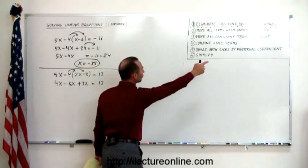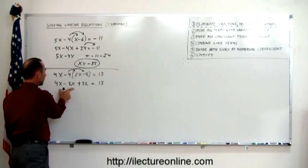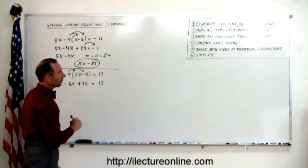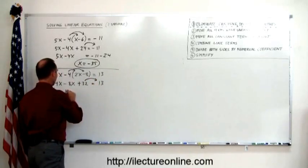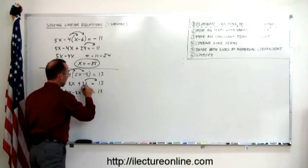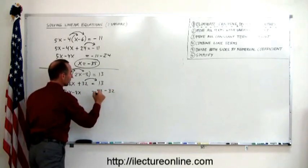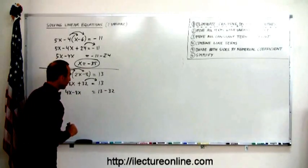Next step, move all the terms with the variable to the left. They're already here. We can skip that. Step number three, move all the constants to the right. So we have 4x minus 8x equals 13 minus 32. Always remember, when you cross equal sign, the sign changes. So from a positive to a negative.